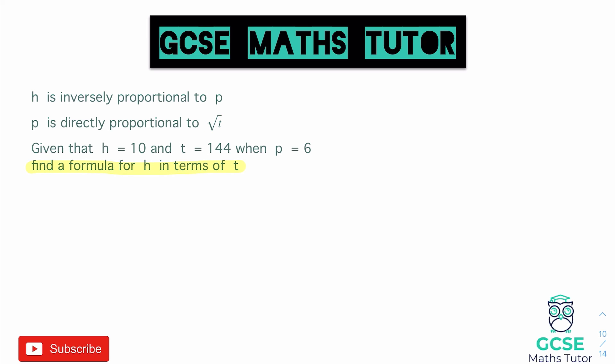So we'll start with the first one, h is inversely proportional to p. So our inverse proportion formula will say h is equal to k over p. And then we'll substitute our values in. So if we put the values in the question, we know h is 10. So 10 is equal to k over p is 6. So multiply both sides by 6, you get 60 is equal to k.